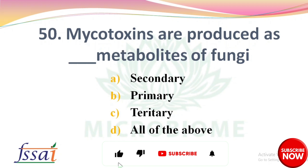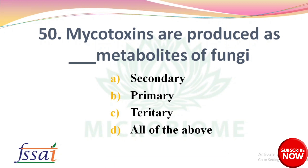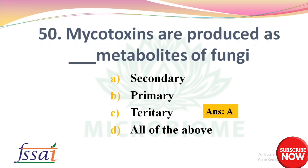Next: Mycotoxins are produced as dash metabolites of fungi — options: secondary, primary, tertiary, all of the above. The right answer is option A, secondary. If you have any doubt, please ask in the comment section. Remaining units will be discussed in upcoming classes, so please subscribe to our channel. Thank you.